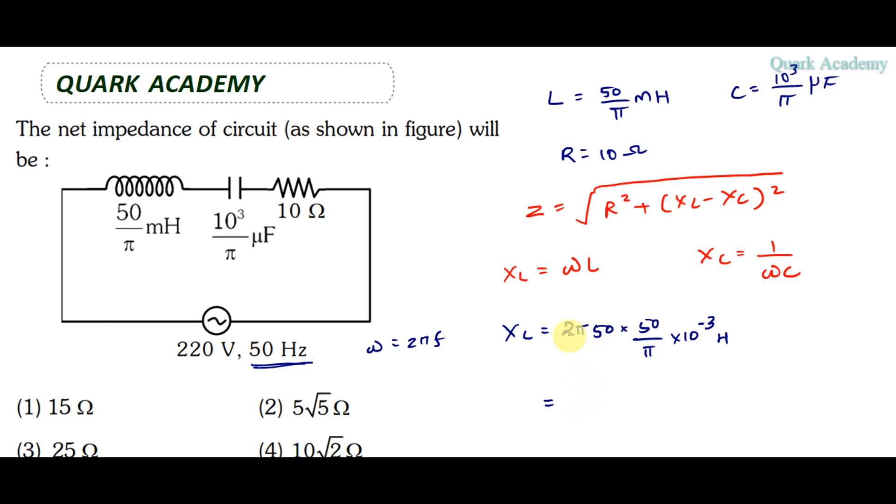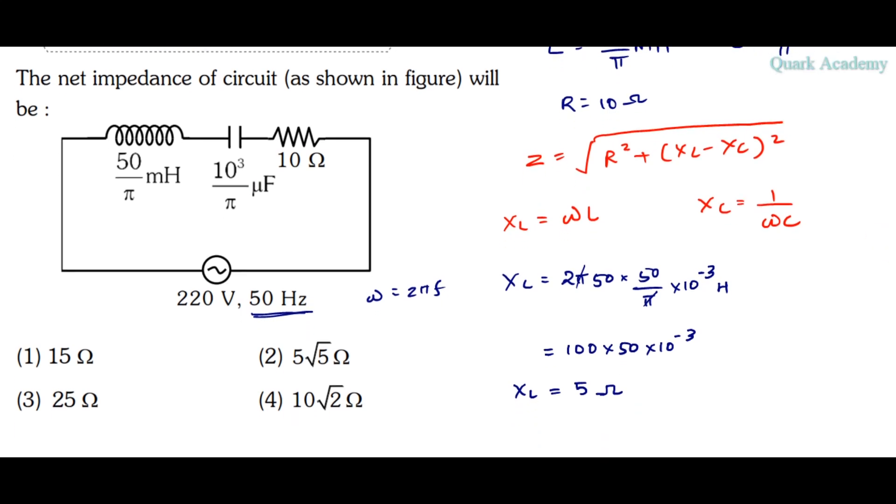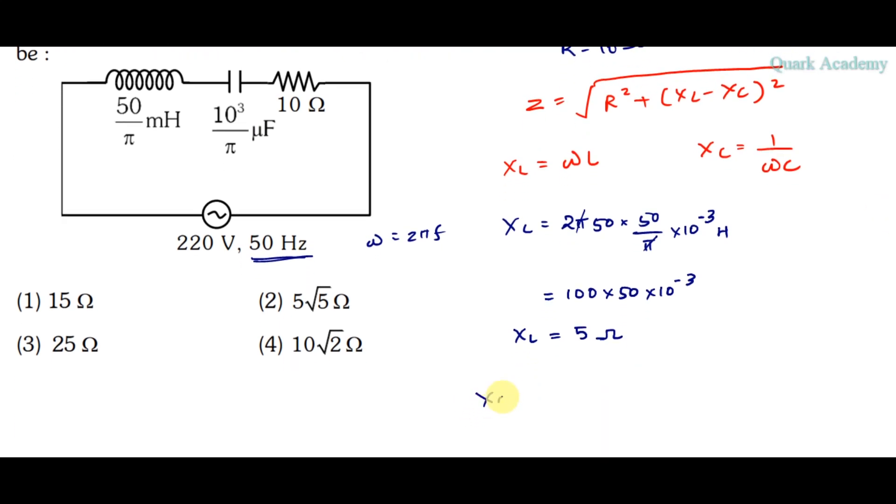After canceling π, we get 100 into 50 into 10⁻³, which gives us XL equals 5 ohm. Now we calculate XC, which equals 1 by ωC.